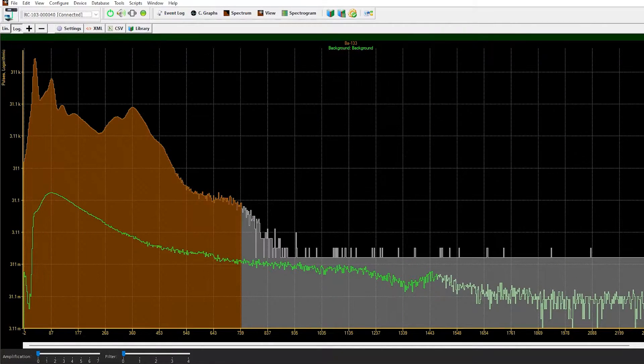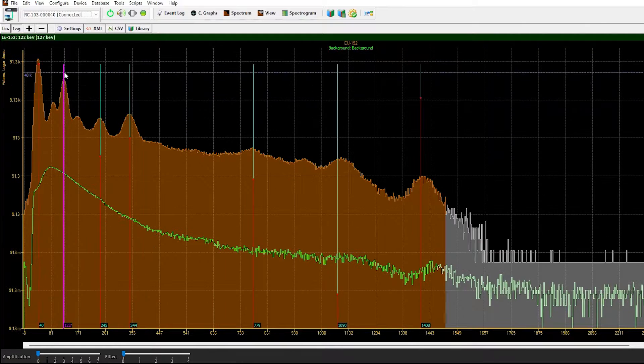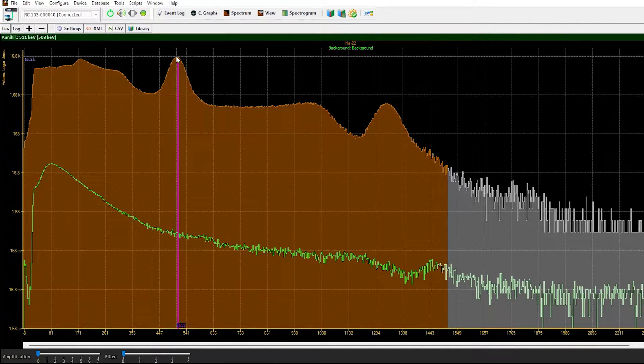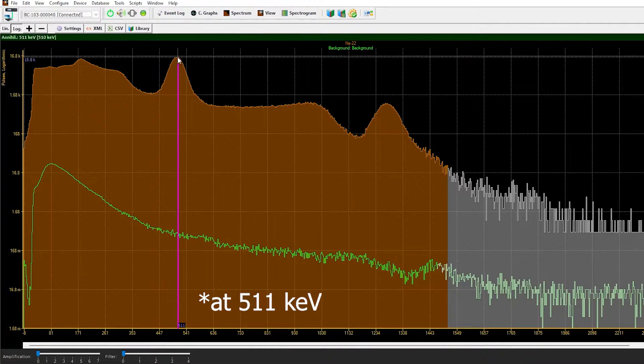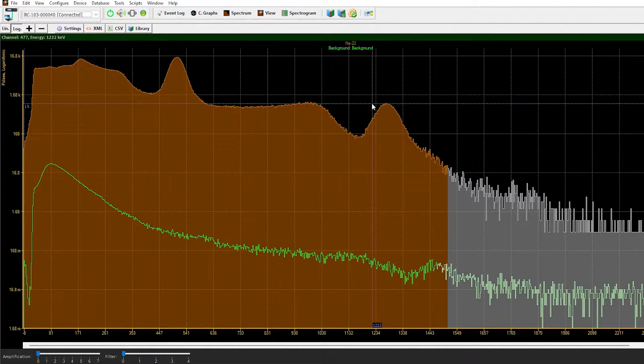Here are some other spectra like the barium-133, the classic cesium-137, europium-152, which is often used for calibration, and the sodium-22 with the annihilation peak at 511 kilo electron volts and the actual gamma line at 1.2 mega electron volts.